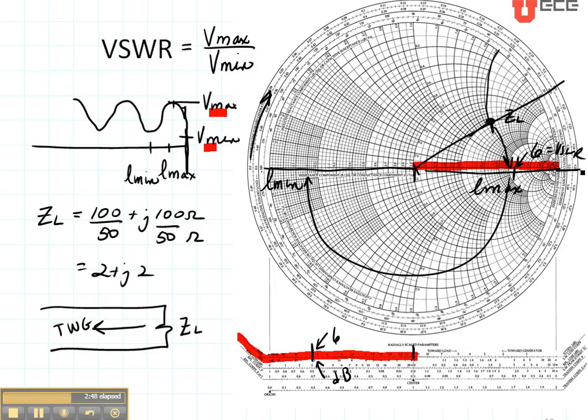So here we can actually read the location of the voltage maximum. If we want to know this distance, let's call it L max. This distance L max is going to be this value which is 0.25, I'm reading on my outside towards the generator axis, minus this value right there which is 0.21. So my L max is at about 0.04 wavelengths.